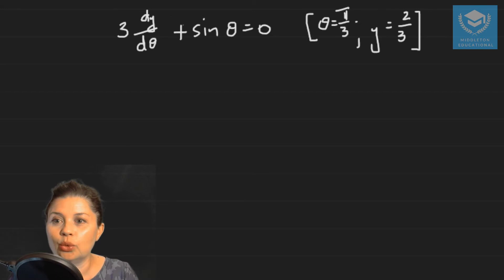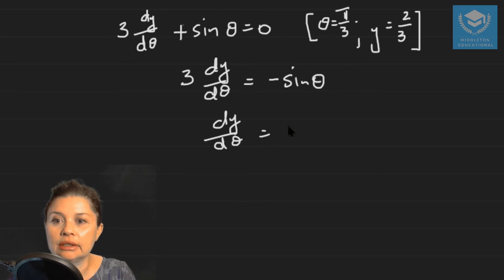So in this example, we now want to get the derivative on its own on the left hand side, which means we're going to have 3 dy dθ equals minus sine theta. And then the derivative is going to be minus a third sine theta.